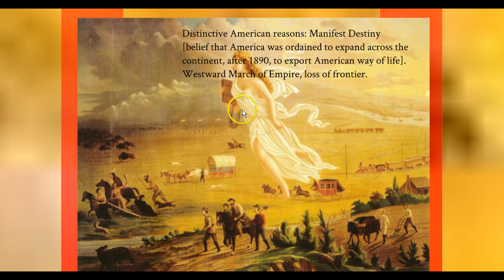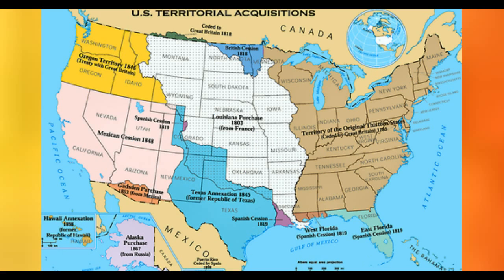Manifest Destiny — this is a very famous painting of destiny leading the way, leading the settlers across the West. That worked very well in the United States, and it kind of justifies American imperialism. We can see the forming of the colonies, and after the French and Indian War, territory inland to the Mississippi River. The Louisiana Purchase from France by Thomas Jefferson, the Mexican-American War ceding more territory, and James K. Polk simply taking more territory.